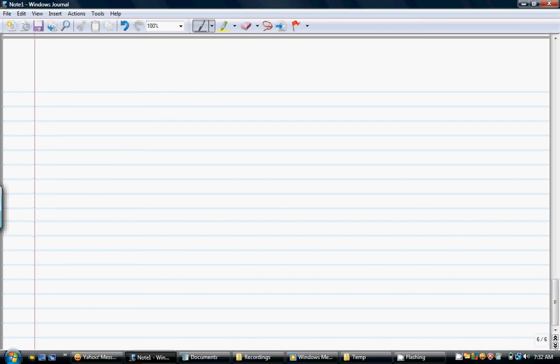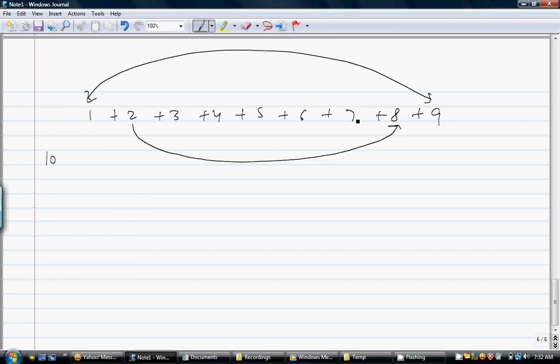So let's go to the series again. So we have 1 plus 2 plus 3 plus 4 plus 5 plus 6 plus 7 plus 8 plus 9. So you can see that these numbers 1 and 9 add up to be 10, then 2 and 8 again add up to be 10, and 3 and 7 is again 10, and then 4 and 6 is again 10, and I'm left with 5.